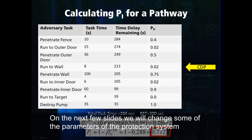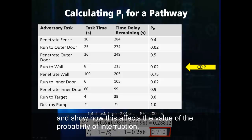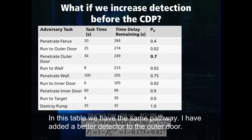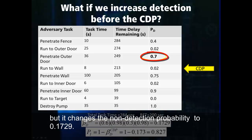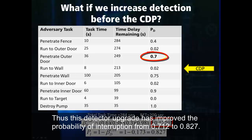On the next few slides, we will change some parameters of the protection system and show how this affects the value of the probability of interruption. In this table, we have the same pathway, but have added a better detector to the outer door. This does not affect delay times and therefore has no effect on the critical detection point, but it changes the non-detection probability to 0.1729. Thus, this detector upgrade has improved the probability of interruption from 0.712 to 0.827.